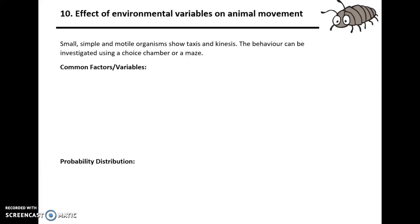Hello and welcome to TeachingBio. Today we're going to look at the 10th required practical of A-level biology, and that is the effect of environmental variables on animal movement. In these practicals involving animal movement, which show taxis or kinesis, the animals are generally small, simple, motile organisms — for example, wood lice, maggots, or worms.